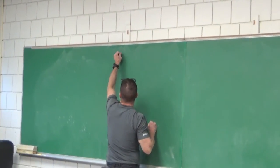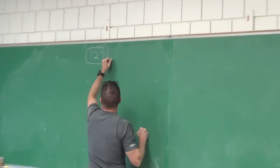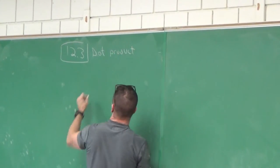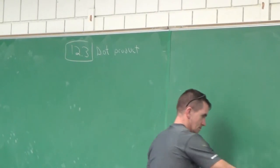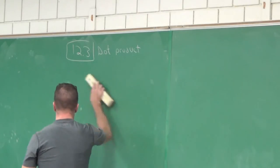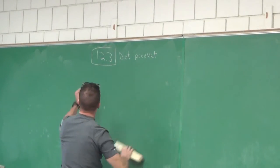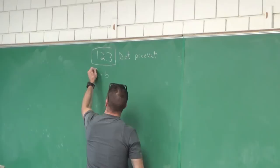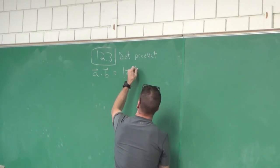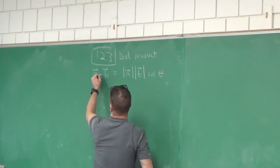We'll even get into 12.4. Section 12.3 is on the dot product. I want to put down the dot product equation — it's on the formula sheet. A dot B is equal to the magnitude of vector A, the magnitude of vector B, times the cosine of theta. That's the dot product.